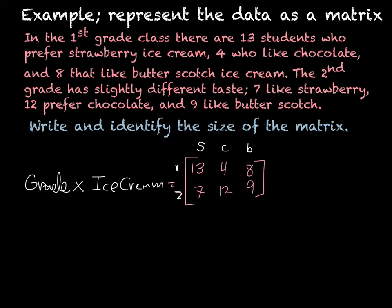So now we identify the size. The size would be number of rows, one, two, because there were two grades, by the number of columns, which is the ice cream. So two by three, that would be your answer.